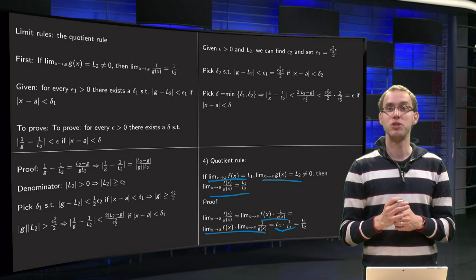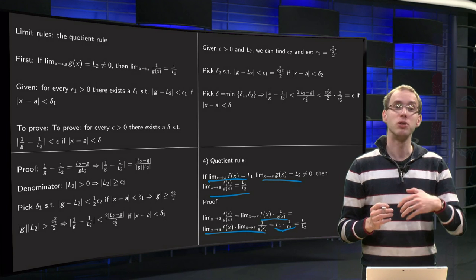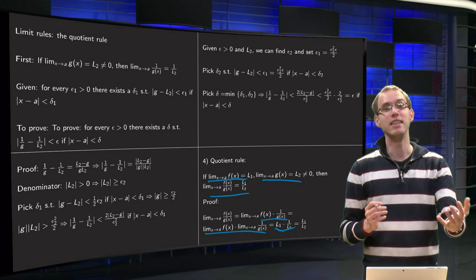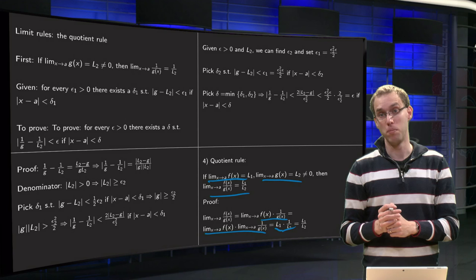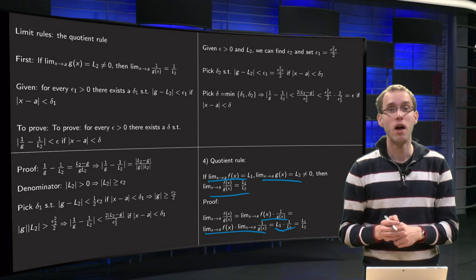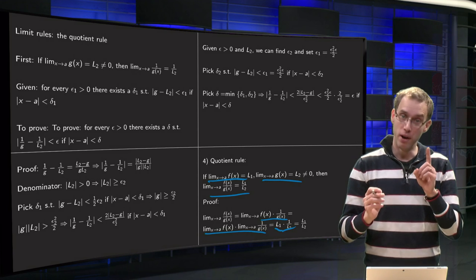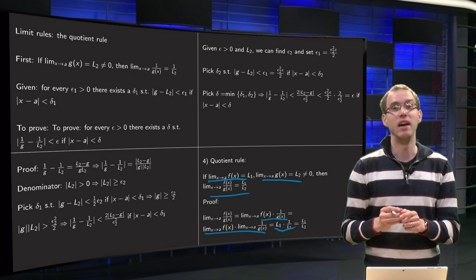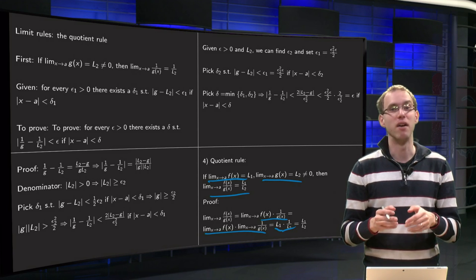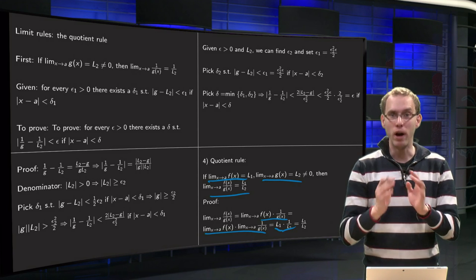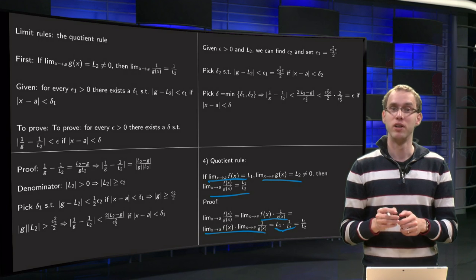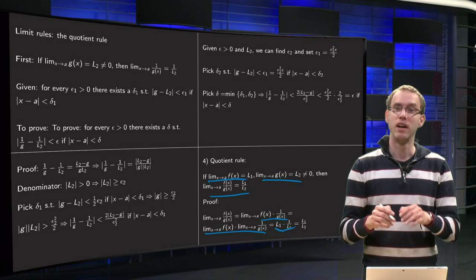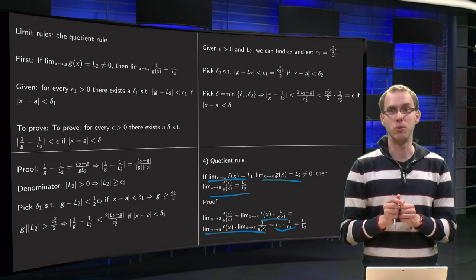So, as you see, the quotient rule is indeed a straightforward consequence of the product rule, but you really need to be careful to stay away from zero with your denominator, and that is what took quite some effort in proving the quotient rule.